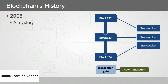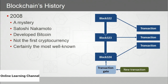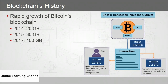Its introduction is as interesting as what happened next, because there's a mystery about how it came to be. Satoshi Nakamoto is the name used for a person — or a group of persons, we don't really know — who published a white paper on a cryptocurrency based on blockchain, and also developed the first blockchain: Bitcoin. Since 2008, there's been rapid growth, with Bitcoin's blockchain hitting 20 gigabytes by 2014, 30 gigabytes in 2015, and 100 gigabytes in 2017.